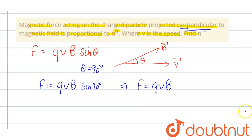So this means that F is proportional to V to the power 1. That means n equals 1. I hope that answers your question. Thank you.